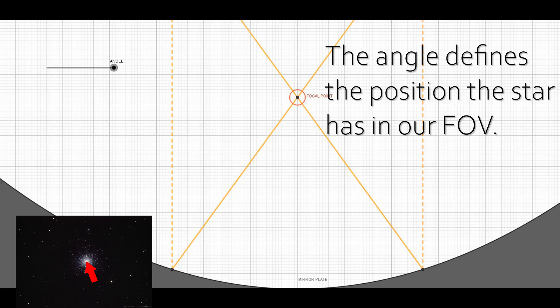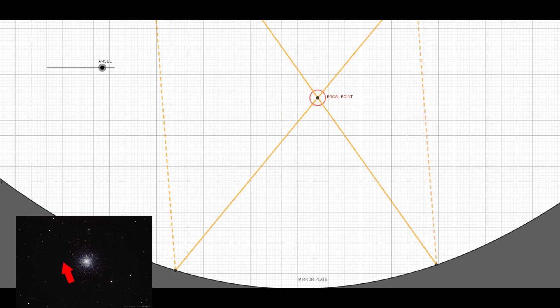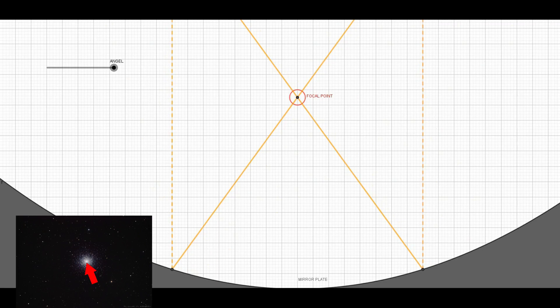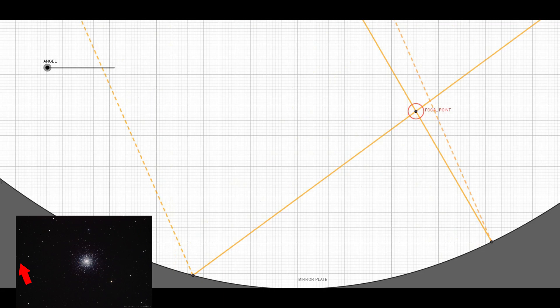The angle defines the position the star has in our field of view. Every star then has its own focal point, and I mean that makes sense. If you place a sensor at the focal plane, then you don't want all stars to be focused in one point. Every star shall be focused onto its own focal point to be distinguished in the image taken. And that's true for both mirrors and lenses.